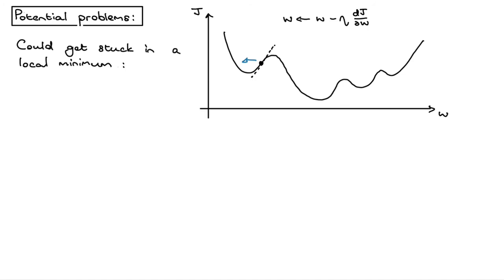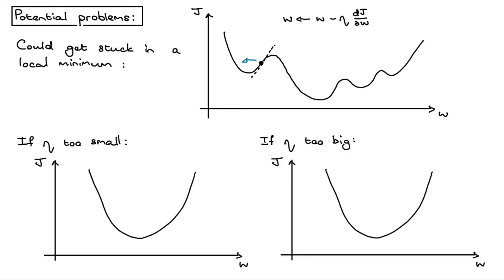Even if there is just a single global minimum, you can still run into problems with gradient descent. This learning rate parameter can be quite important. What happens if the learning rate eta is set to a value that's too small? Then we might start at some position and move down only a little bit at a time, and if eta is set too small it is going to take a really, really long time to get to the minimum value.